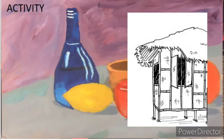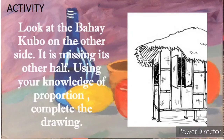Since you already know what proportion is and its element, which is spatial awareness, here is your activity. In a long bond paper, look at the bahay kubo on the other side — it is missing its other half. Using your knowledge of proportion, complete the drawing. Make sure to apply proportion and its element. I know that you are good in drawing, so you may now start.